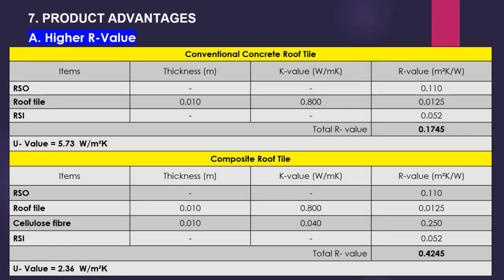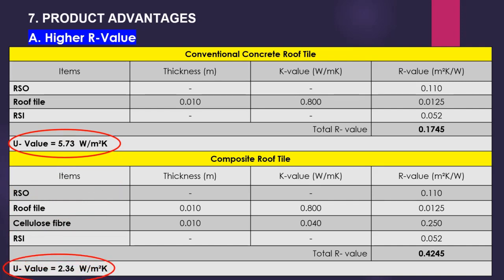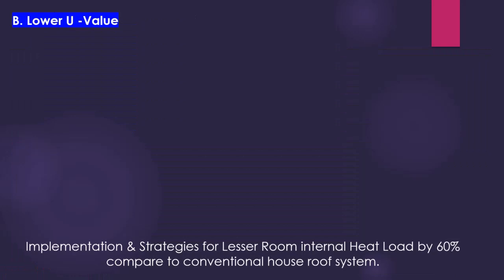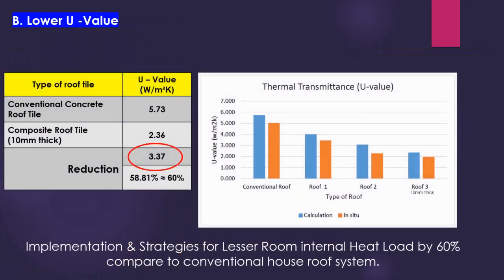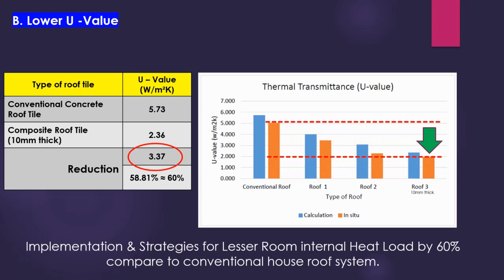From the table, the calculated U-value for the conventional concrete roof tile is about 5.73 watts per meter squared kelvin, while the composite roof tile is about 2.36 watts per meter squared kelvin. The U-value has been reduced by 3.37 watts per meter squared kelvin, equivalent to a 60 percent reduction.